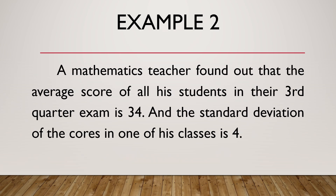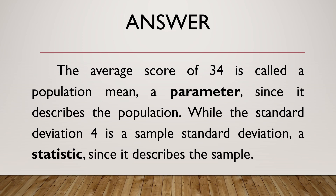In the second example, a mathematics teacher found out that the average score of all his students in their third quarter exam is 34, and the standard deviation of one of his classes is 4. The average score of 34 is called a population mean, hence a parameter, since it describes the population. On the other side, the standard deviation of 4 is a sample standard deviation, hence a statistic, since it describes the sample.